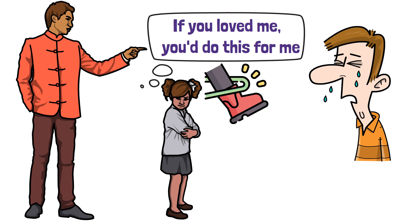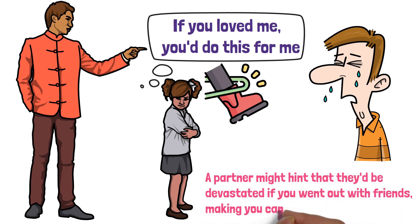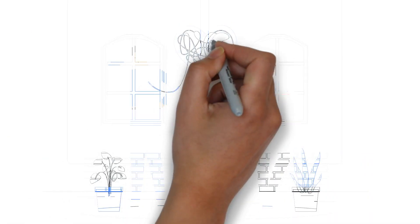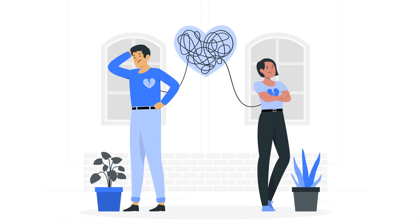For instance, a partner might hint that they'd be devastated if you went out with friends, making you cancel plans. Over time, this creates an imbalance in the relationship, where your decisions aren't based on what you want, but on avoiding conflict or negative emotions.